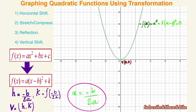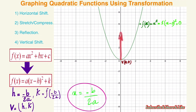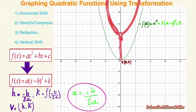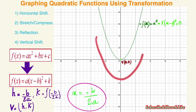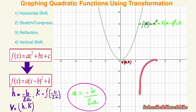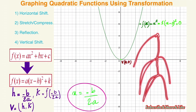About vertical shifting: the value k is responsible for vertical shifting. If k is positive, the graph goes up — like you're pulling the vertex upward. If k is negative, the graph goes down. This applies whether the parabola opens up or down — a positive k pulls it up, a negative k pushes it down.